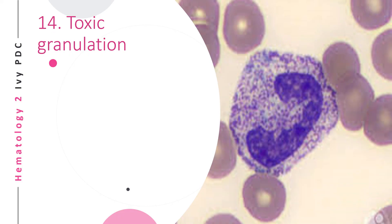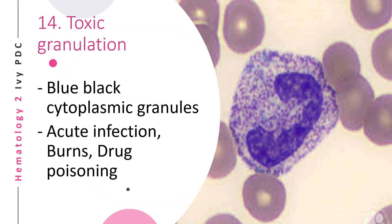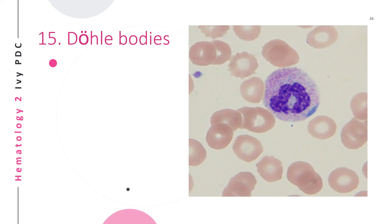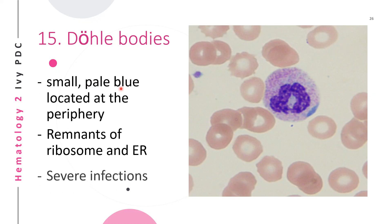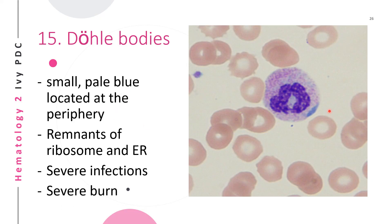Toxic granulation refers to neutrophils with blue-black cytoplasmic granules — the counterparts of basophils. These may be seen in acute infection, burns, or drug poisoning. Döhle bodies are small, pale blue, peripherally located bodies in the cytoplasm — remnants of the ribosome and endoplasmic reticulum. They may be seen in severe infections and severe burns. The difference from May-Hegglin anomaly is that the platelets are not giant.